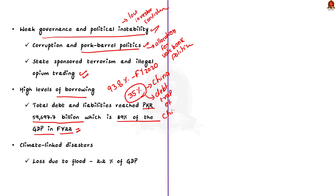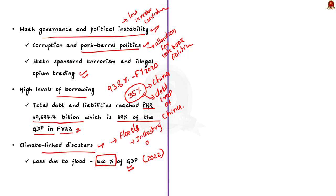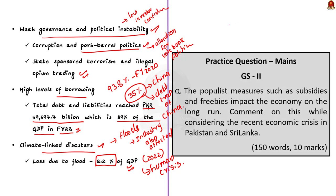Pakistan is also highly vulnerable to climate-linked disasters such as floods. The loss in gross domestic product as the direct impact of the floods is projected to be around 2.2% of GDP in 2022. This damage and loss in agriculture has spillover effects on industry, external trade and the service sector. Besides this, large populations have been displaced, further aggravating the economic crisis. These are the major reasons why Pakistan has sought IMF bailout a record 13 times in the past 40 years.